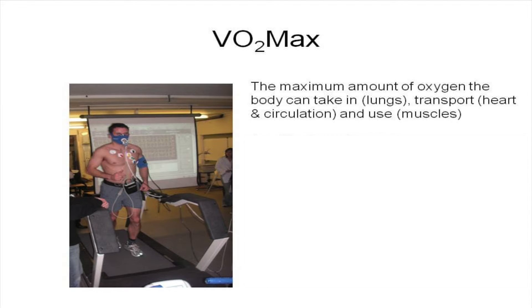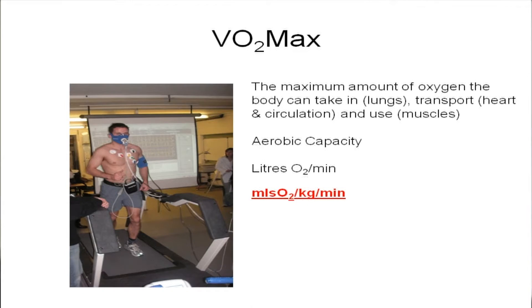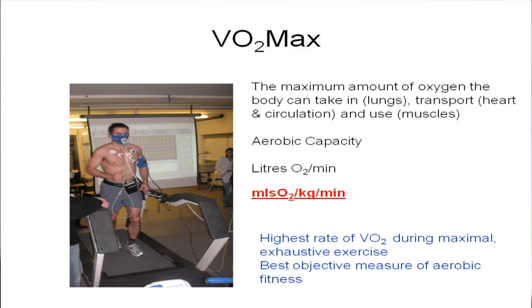So what actually is VO2 max? It's the maximum amount of oxygen the body can take in — in other words through the lungs, transport, heart efficiency and circulation — and use: the ability of the muscles to extract that oxygen and use it for energy. That is otherwise called aerobic capacity. The units we use can either be litres per minute, but more conventionally, so we can compare individuals and genders on a normative database, we use millilitres of oxygen per kilogram per minute. VO2 max is the highest rate of oxygen uptake during maximal exhaustive exercise and it's our best objective measure of aerobic fitness.